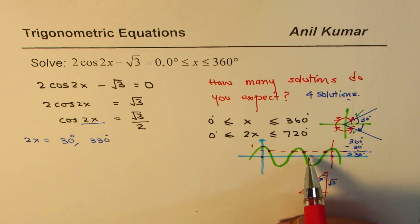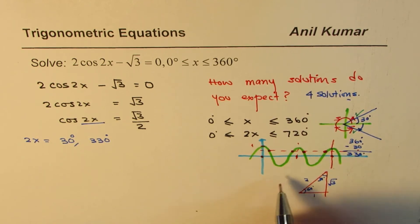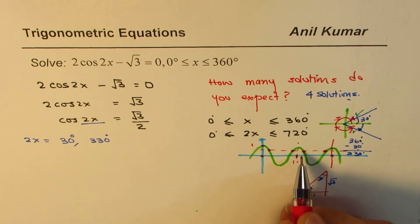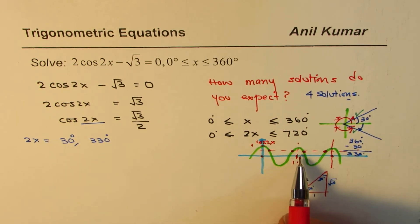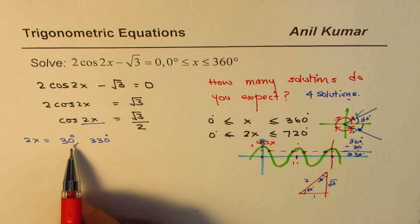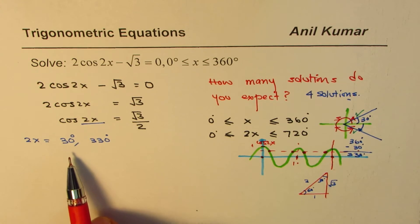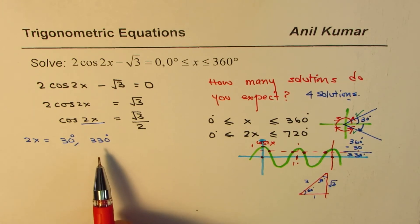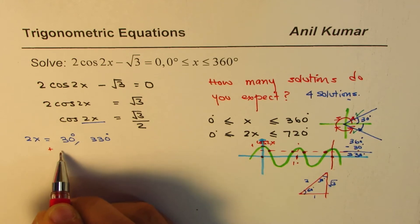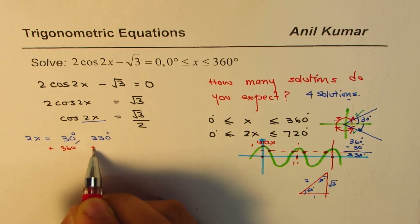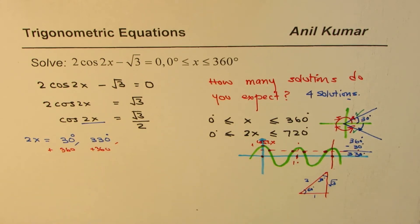To get two more, that means we have covered from here to here. That is from here to here. This is for cos 2x. So to go further, we have to add to this 360. So add 360 to it. So when you add 360 to this and add 360 to this, you get the other two values. So do this.